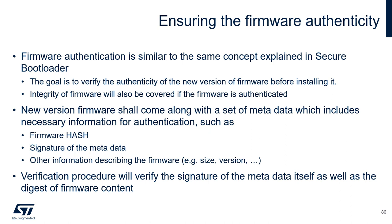One key responsibility of secure firmware update is to ensure firmware authenticity. Firmware authentication during firmware updates is similar to the concept explained in the secure bootloader — the goal is to verify the authenticity of the new version before installing it. The integrity of the firmware will also be covered if it is authenticated. A new version of firmware shall come along with a set of metadata which includes necessary information for authentication, such as the firmware hash, signature of the metadata, and other information describing the firmware itself — for example, the size, version, etc. The verification procedure will verify the signature of the metadata as well as the digest of the firmware content.